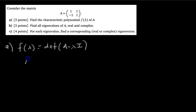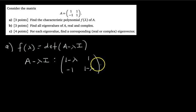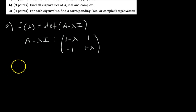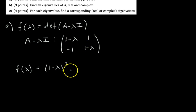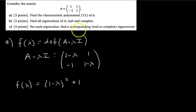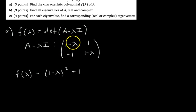So what is A minus lambda I? That matrix is: 1 minus lambda, 1, negative 1, 1 minus lambda. We want to find the determinant of that. So F of lambda — the characteristic polynomial — you just do this product minus this product. You get 1 minus lambda squared, then minus negative 1, so plus 1. This is the characteristic polynomial. Don't set it equal to 0 — that's how you find the roots. It's just asking for the polynomial itself, so circle this polynomial as your answer to part A.